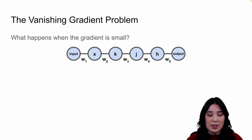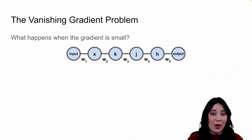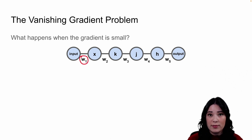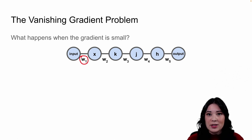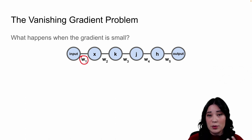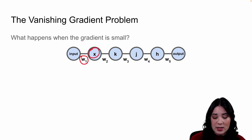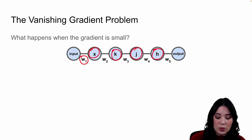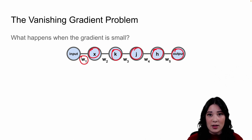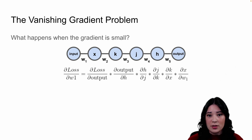Since the learning rate and the gradient determine exactly what change we make to our parameters, if either value is zero then we're not going to update our parameters at all. This is a challenge especially for earlier parameters like weight one. Even in an incredibly simple architecture with no activation functions and only one layer of nodes, we still have a very deep network. To find the partial derivative of the loss with respect to weight one, we must go through the entire network, since changing weight one changes x, which changes k, then j, then h, then the output, and finally the loss.